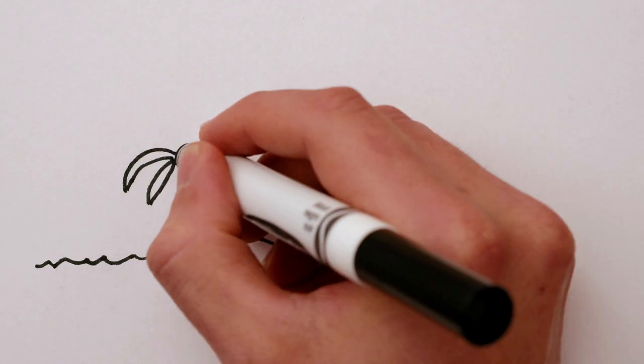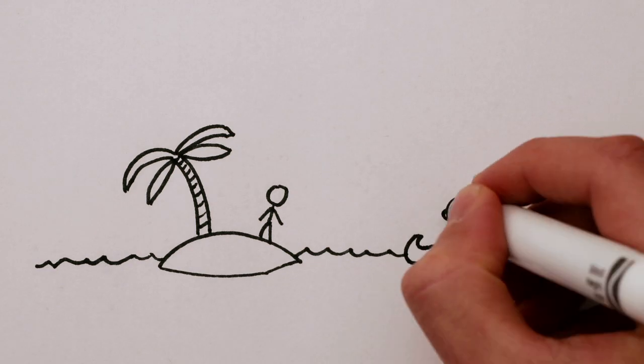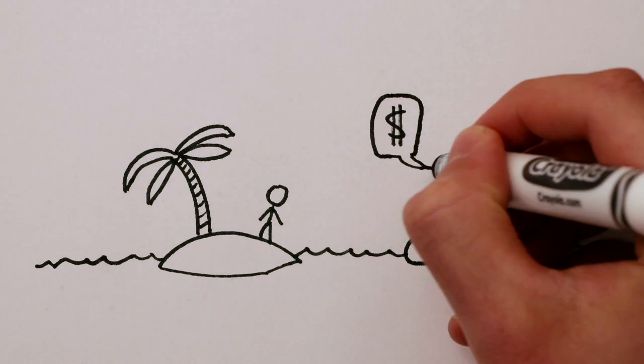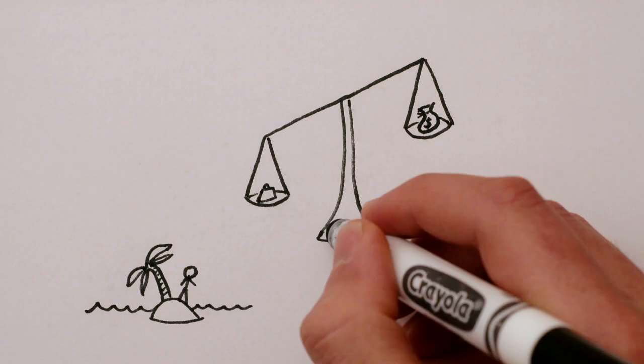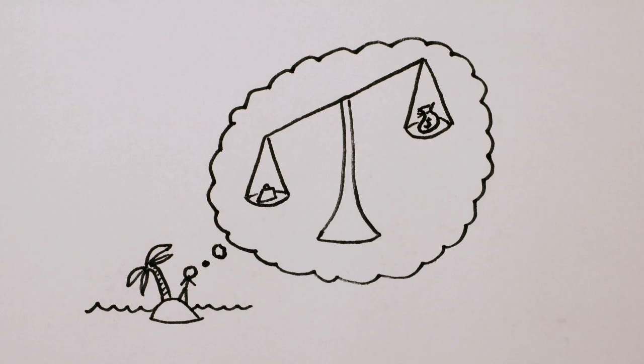Suppose you're stuck on a desert island with no internet, no books, and an evil genius who will only let you off if you can tell him how much a million dollars weighs. Luckily, you're a physicist, so you can weigh a million dollars with your mind. Here's how it goes.